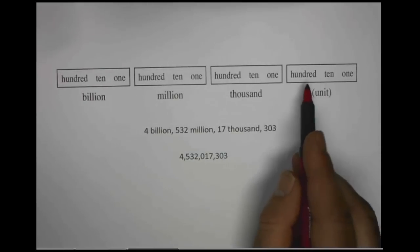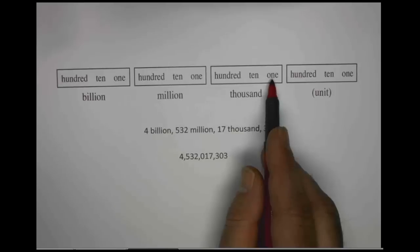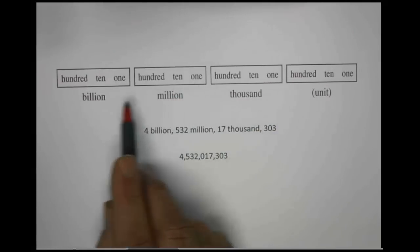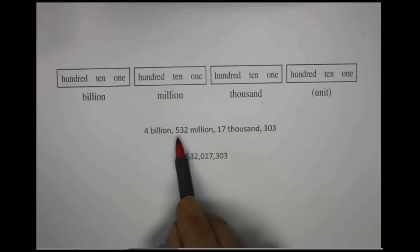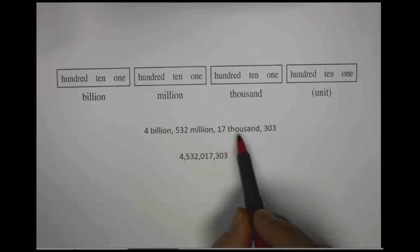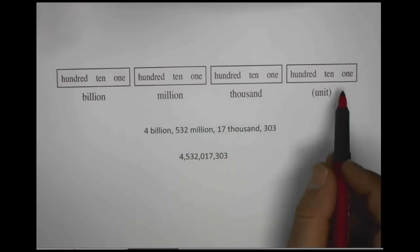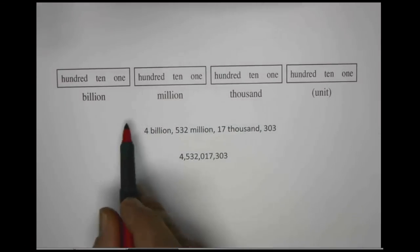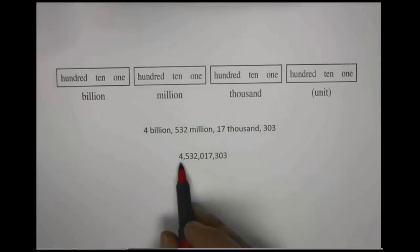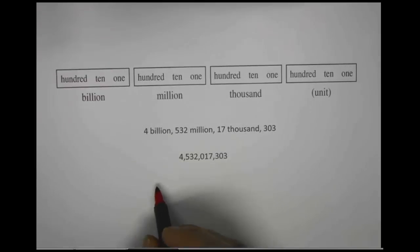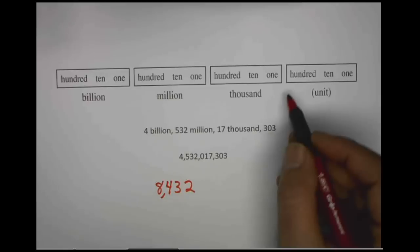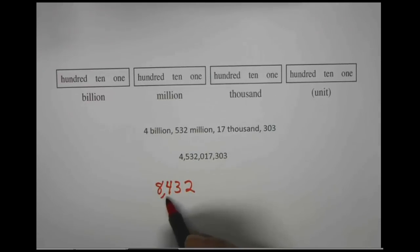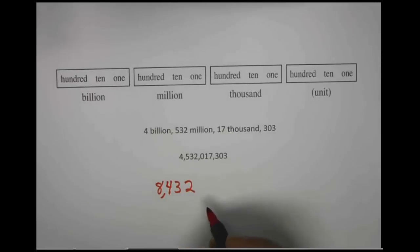1s, 10s, 100s, and then in the thousands group we still repeat 1s, 10s, 100s, millions, 1s, 10s, 100s — as you see the pattern. When we're reading numbers, we might have 4,532,017,303. We say and read numbers in groups of three. So let's say we had a number of 8,432. We say 8,000, reading groups of three, and then we say the 432. We're reading and saying groups of three.